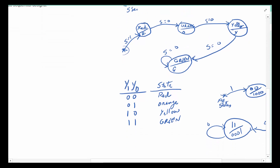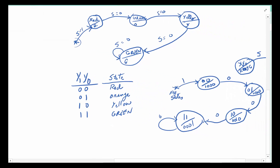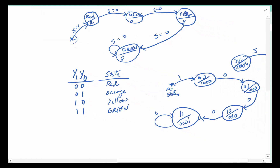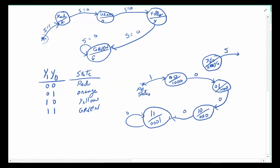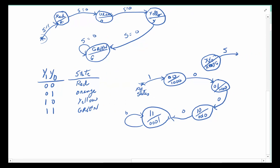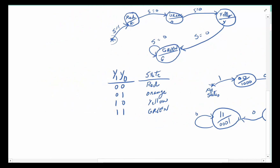We made the assignment — we know there are four states, therefore we need two flip-flops. We are doing full encoding in this particular case, and we made the assignment of red, orange, yellow, and green to the new state variables. After that we did the state diagram, putting in the zeros and ones and giving ourselves a nice legend so we can follow what's going on.